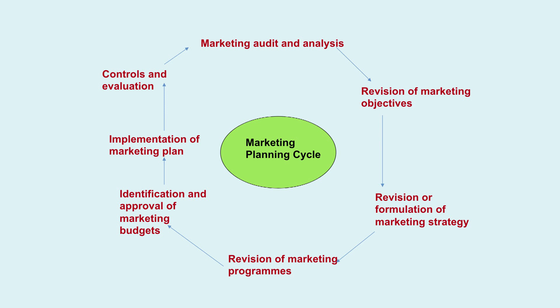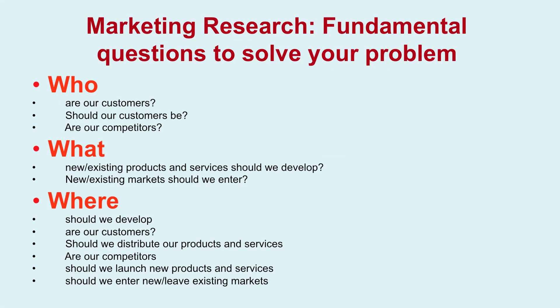The marketing planning cycle involves: conducting a marketing audit and analysis, revision of marketing objectives (as time changes), revision of marketing strategy, revision of marketing programs, identification and approval of marketing budgets, implementation of the marketing plan, and control and evaluation. This is a complete cycle which is very important.